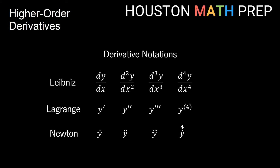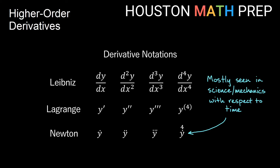Our Newton notation, in the last row, is a dot notation. This Newton dot notation is most often seen in science and mechanics subjects, and it's usually a derivative with respect to time — so instead of dy/dx, we think of this as dy/dt. Y-dot is the first derivative of y, usually with respect to time. Y-double-dot is the second derivative, y-triple-dot is the third. Just like with the Lagrange notation, after the third derivative we write a number above the dot so we don't have to count a bunch of dots to figure out what higher order derivative we're taking.